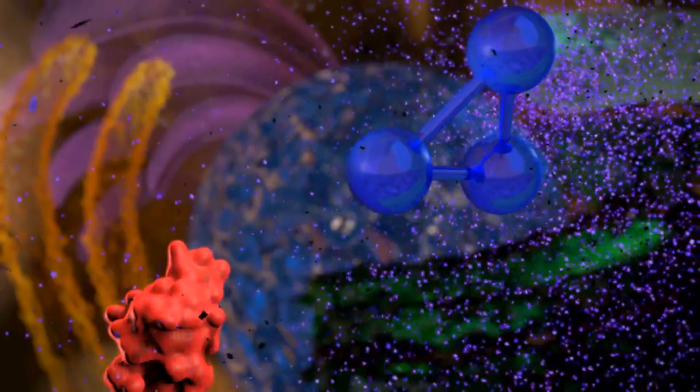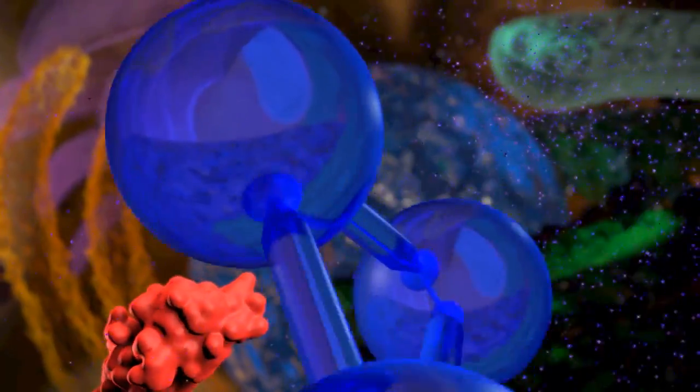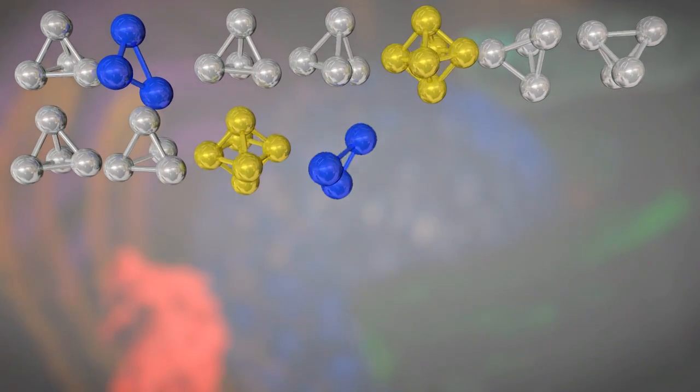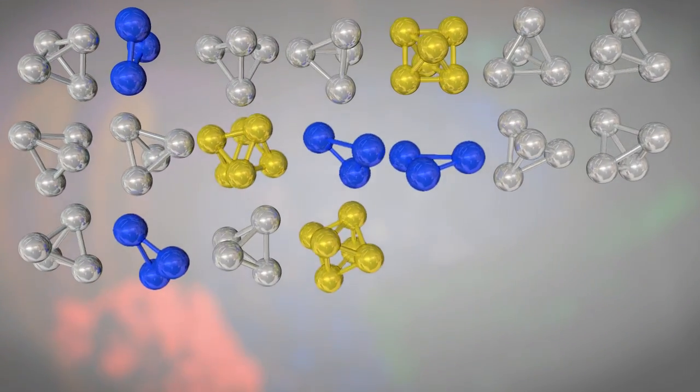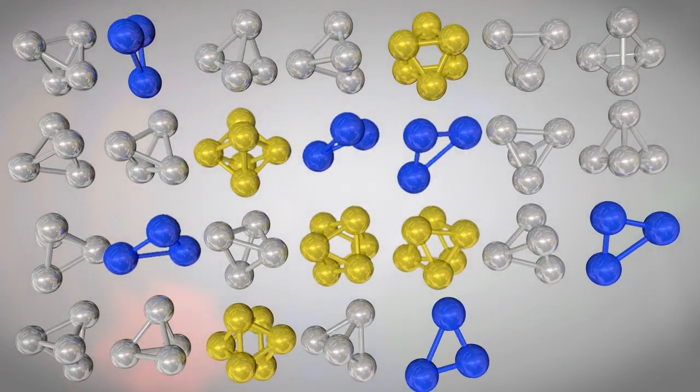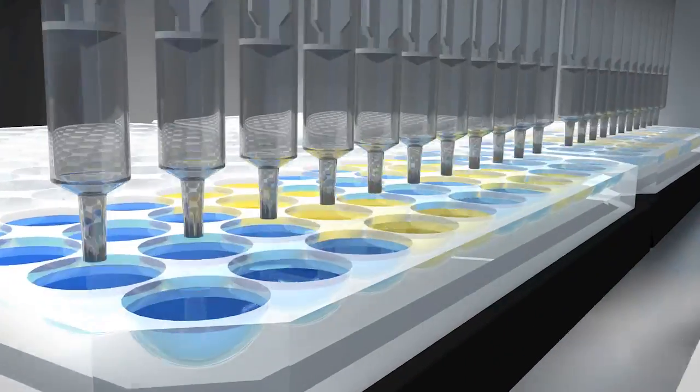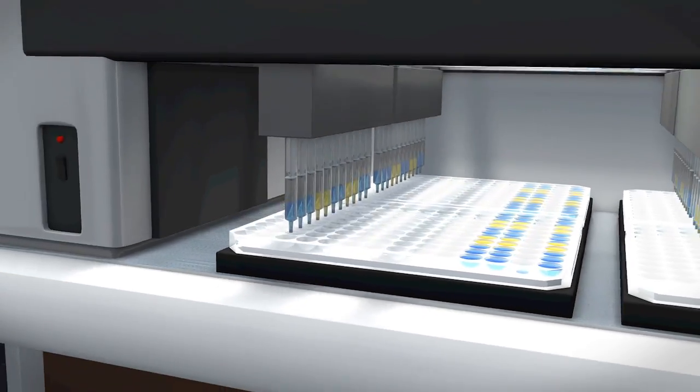They may test tens of thousands of chemical or biological compounds to see if they either inhibit or stimulate a given target. Usually, only a very small percentage of these compounds will have an effect on the target. These hits are then re-screened multiple times to confirm the results and further trim the list of potential drug candidates.